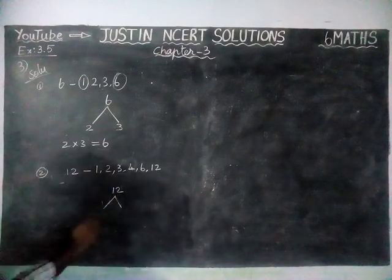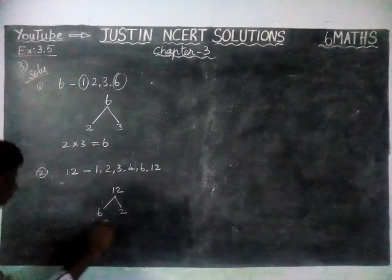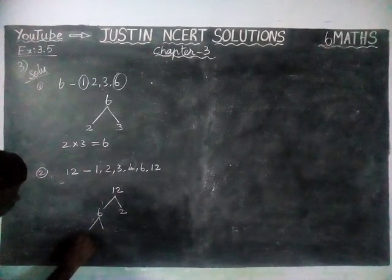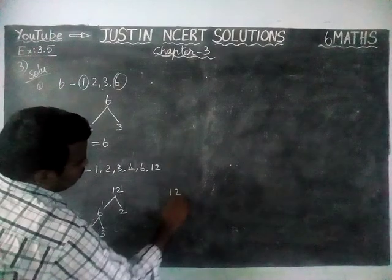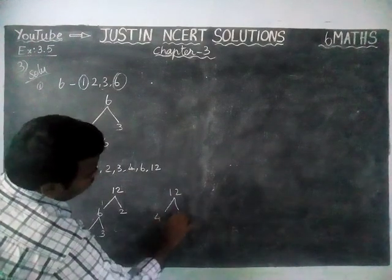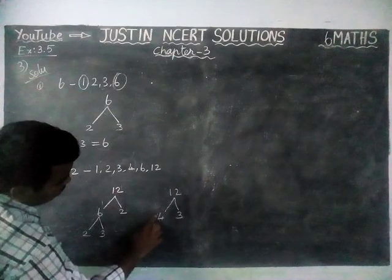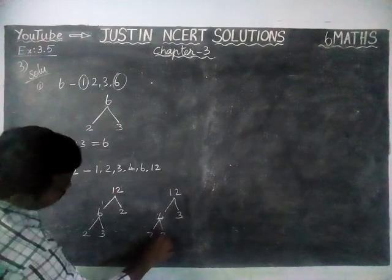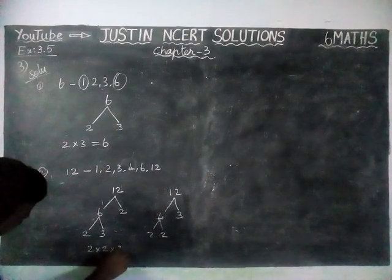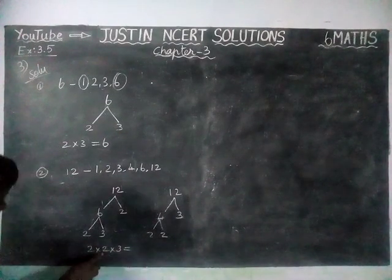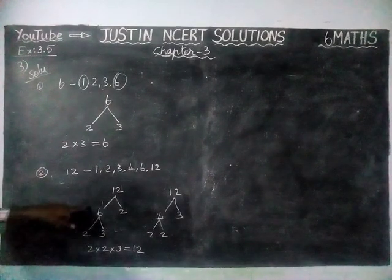For the prime factorization of 12: 2 twos are 4, and 4 threes are 12. The 6 can be written as 2 into 3. Also, 4 is not a prime number, so we separate it: 2 twos are 4. So we get 2 into 2 into 3 equals 12.